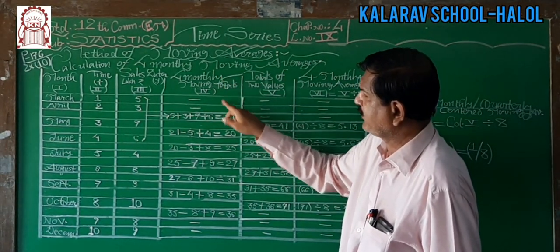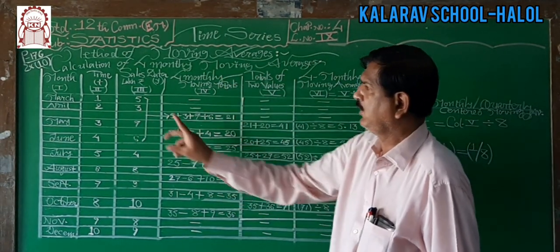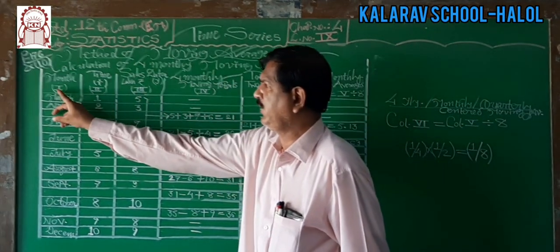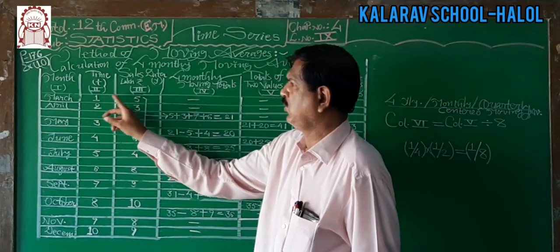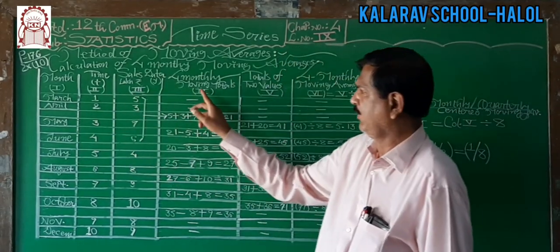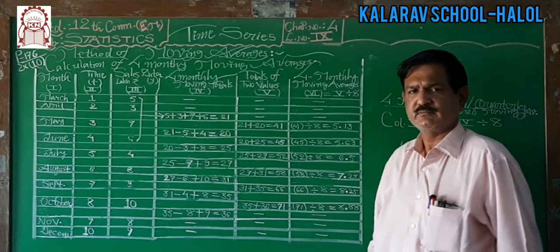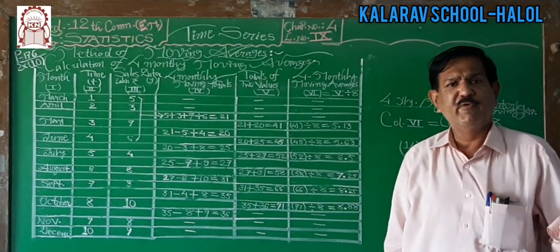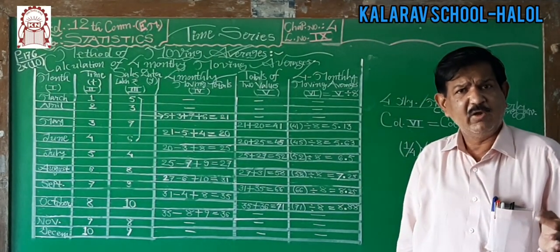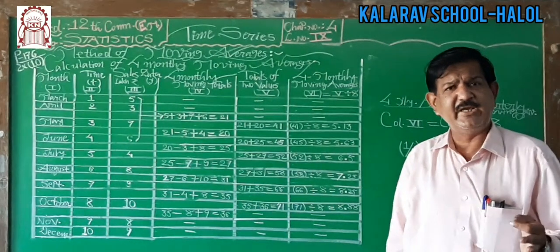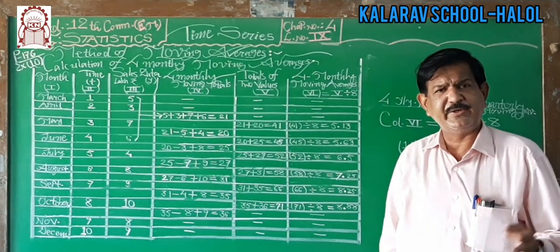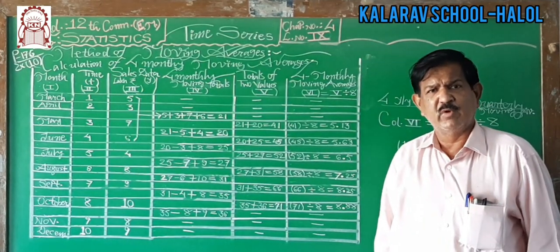This gives us 4-monthly moving totals. The table has column number 1, column number 2, column number 3, and column number 4. This 4-monthly, or 4-yearly, or 4-quarterly moving total is one of the important methods.